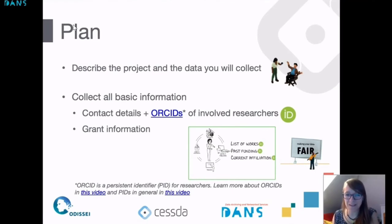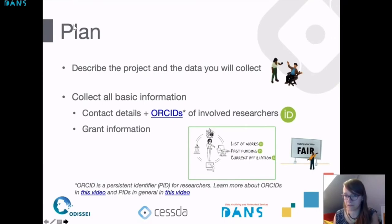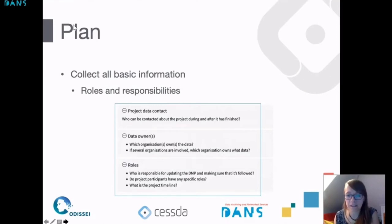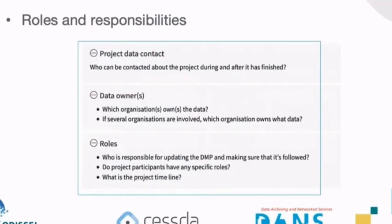I've put some links in this presentation explaining persistent identifiers and particularly ORCID if you're interested to know more. In this planning phase you would collect all basic information including information about your collaborators, their ORCIDs, grants, but also think about roles and responsibilities. For instance, if you're reusing data from somebody else or collaborating with others, it's really important to know who is responsible for data management and who is involved in what role when it comes to sharing the data.